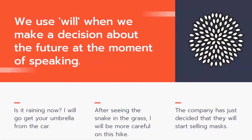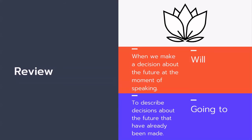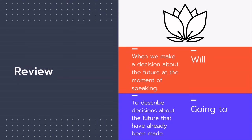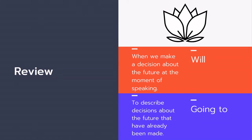We use will when we make a decision about the future at the moment of speaking. For example: 'Is it raining now? I will go get your umbrella from the car' — I made the decision to get the umbrella as I was speaking. 'After seeing the snake in the grass, I will be more careful on this hike' — decided at the moment of speaking. 'The company has just decided that they will start selling masks' — decided right now. We use will for decisions at the moment of speaking, and going to for decisions already made.